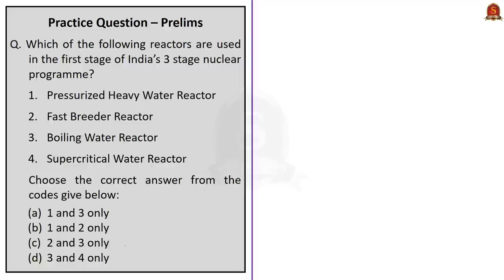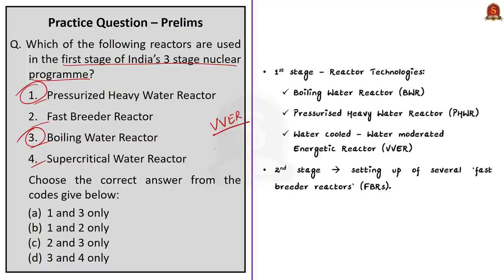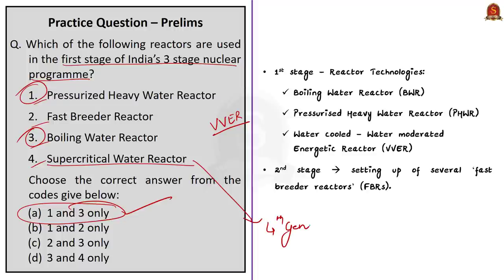Question 3: which of the following reactors are used in the first stage of India's three-stage nuclear program? The options are pressurized heavy water reactor, fast breeder reactor, boiling water reactor, and supercritical water reactor. The first stage reactor technologies include boiling water reactor, pressurized heavy water reactor, and water-water energetic reactor (VVER). The second stage includes fast breeder reactors. So the correct answer is option A — pressurized heavy water reactor and boiling water reactor. Option C — supercritical water reactor — is a concept fourth-generation reactor, mostly designed as a light water reactor that operates at supercritical pressure, currently being researched by the Generation IV International Forum.